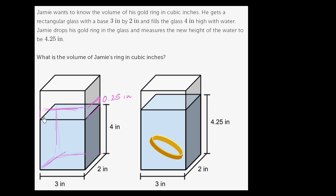So we could just think about what is this incremental volume. This incremental volume that I'm shading in purple. To figure that out, we just have to multiply the length times the width times the height, times 0.25.